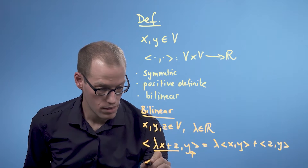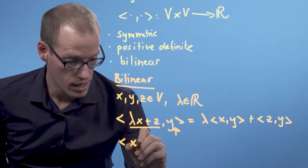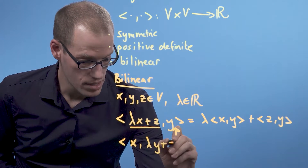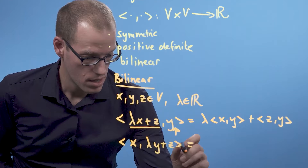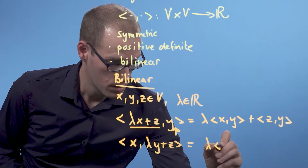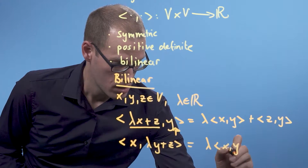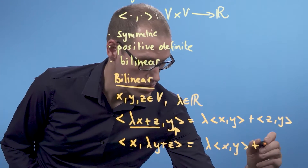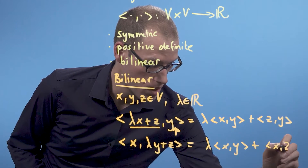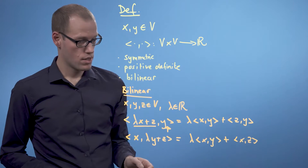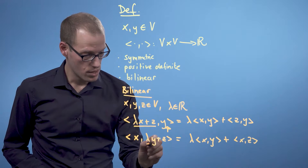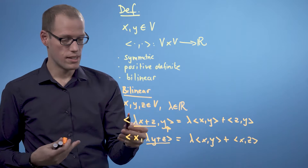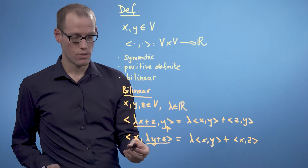Similarly, we require that the inner product between x and lambda y plus z is lambda times the inner product between x and y, plus the inner product between x and z. This means linearity also in the second argument, and that's the reason why this is called bilinear — linearity in both arguments of this function.